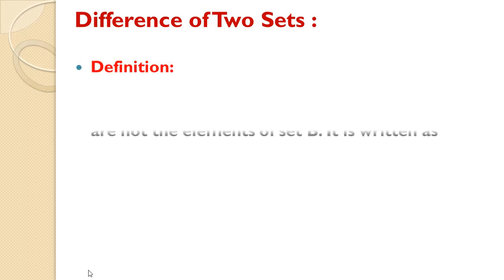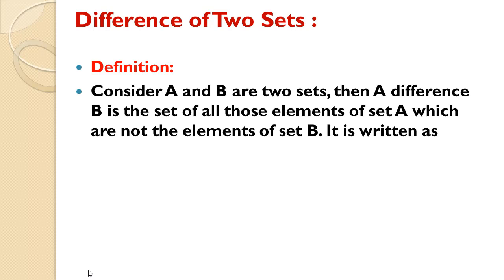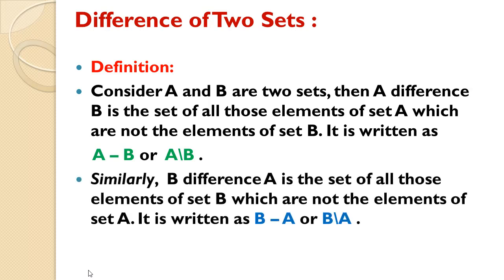Definition: Consider A and B are two sets. Then A difference B is the set of all the elements of set A which are not the elements of set B. It is written as A - B. Similarly, B difference A is the set of all those elements of set B which are not the elements of set A. It is written as B - A.